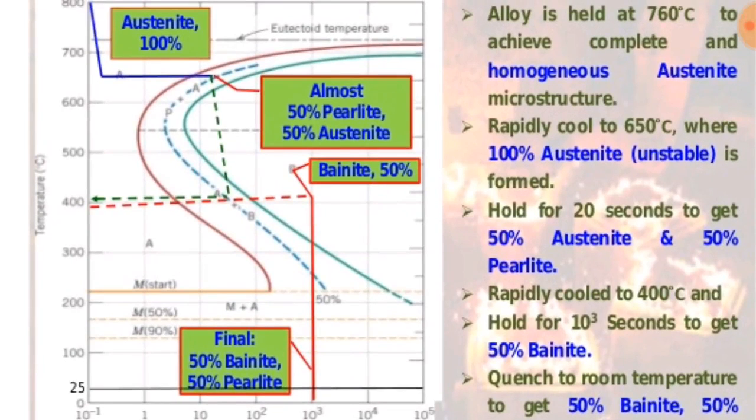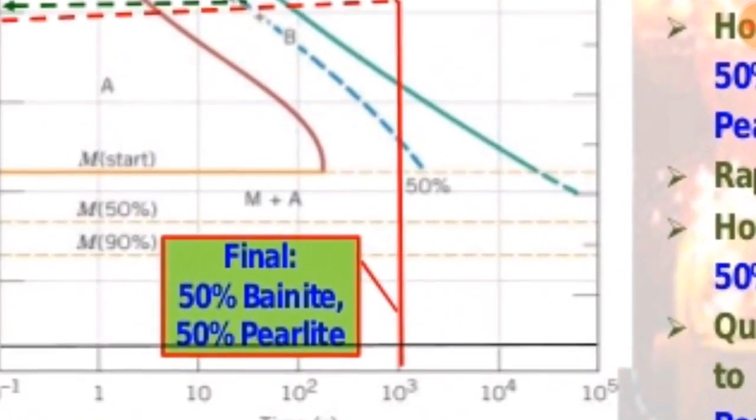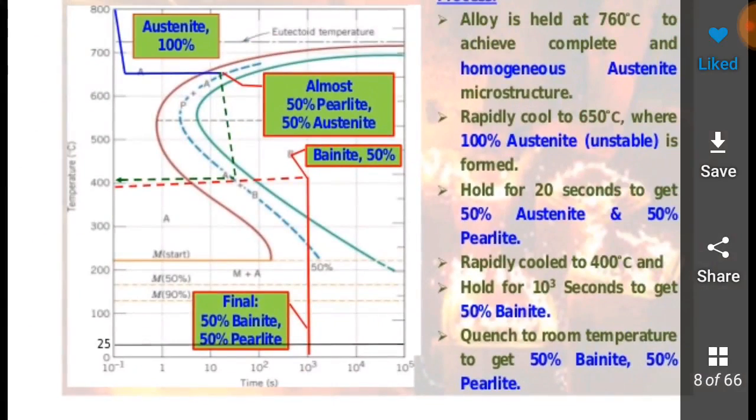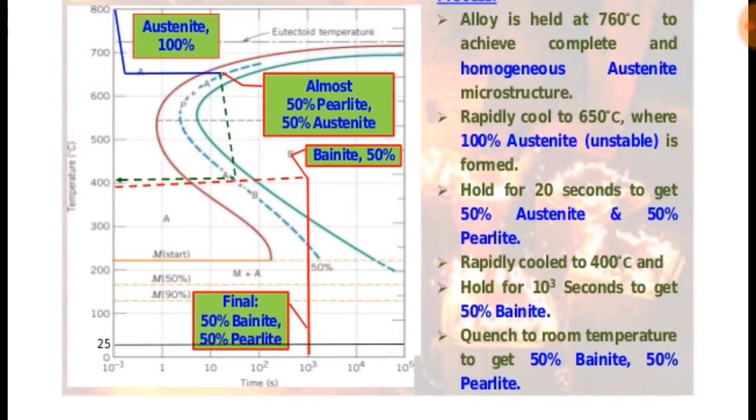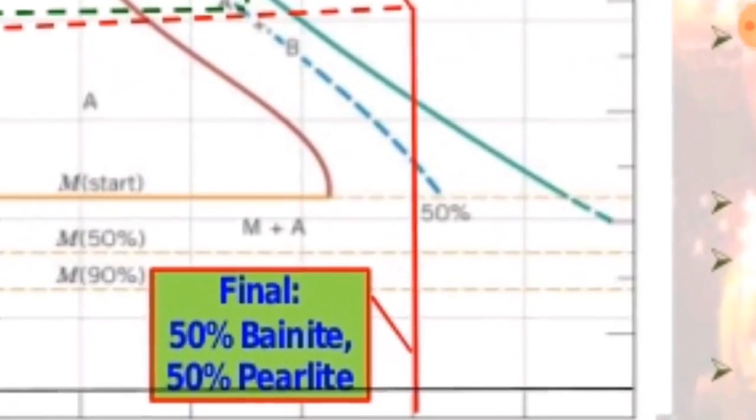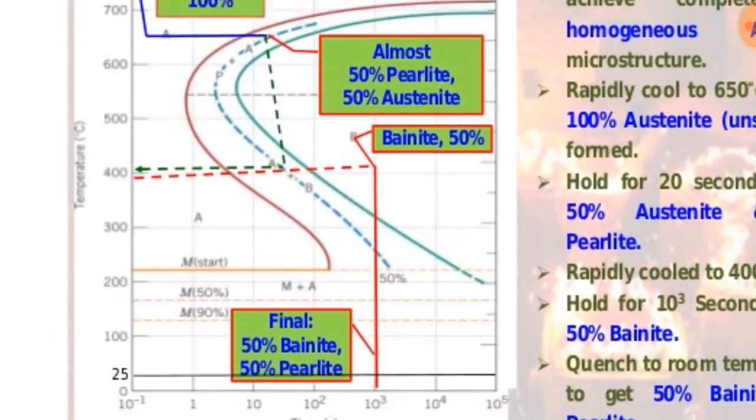Rapidly cool to 400 degrees Celsius and hold for 10^3 seconds to get bainite. Quench at room temperature to get 50% bainite and 50% perlite.